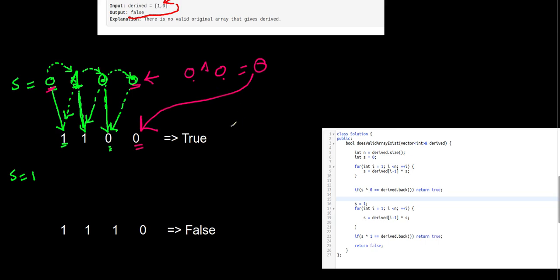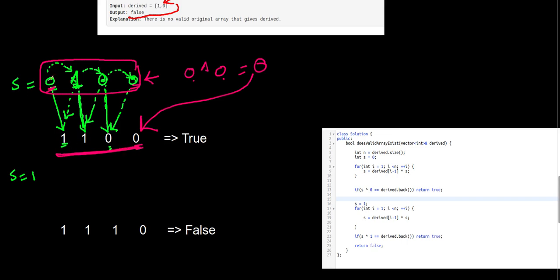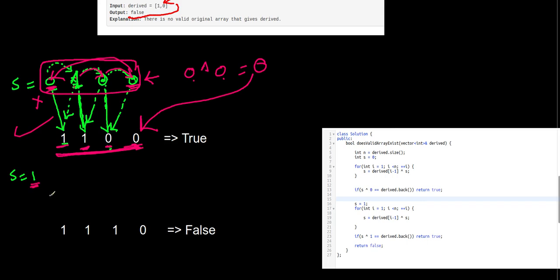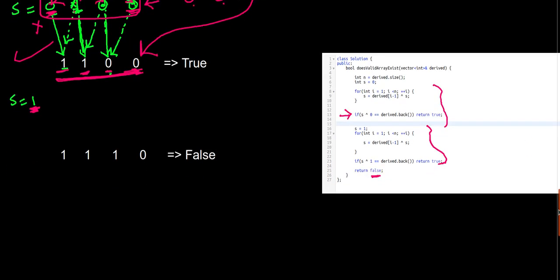That means we are able to find the original array which we can use to generate the derived array. For example: zero XOR one is one, one XOR zero is one, zero XOR zero is zero, zero XOR zero is zero — so we return true. Notice that if we fail when starting with zero, we need to try again with one. If that also fails, we return false; if it passes, we return true. We try first with zero, then with one — if neither works, we return false.